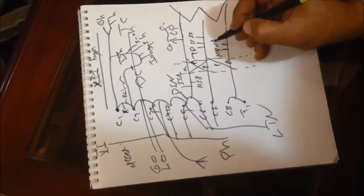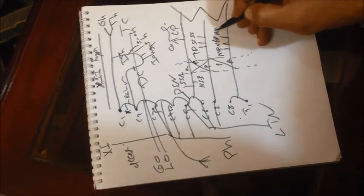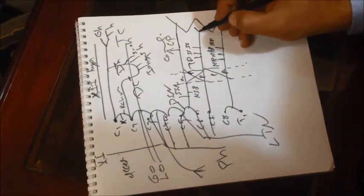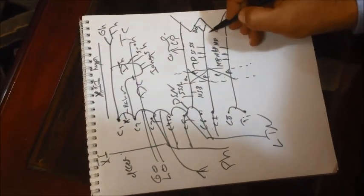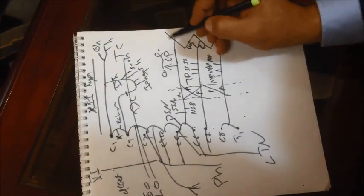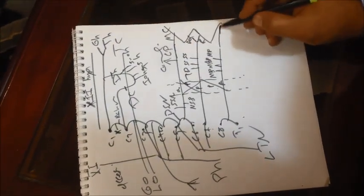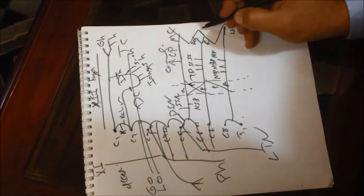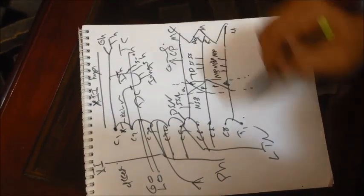Now the terminal branches: from the posterior cord we have axillary and radial, and from the lateral cord musculocutaneous nerve. From the medial cord ulnar nerve, and we have median nerve between lateral and medial cord.